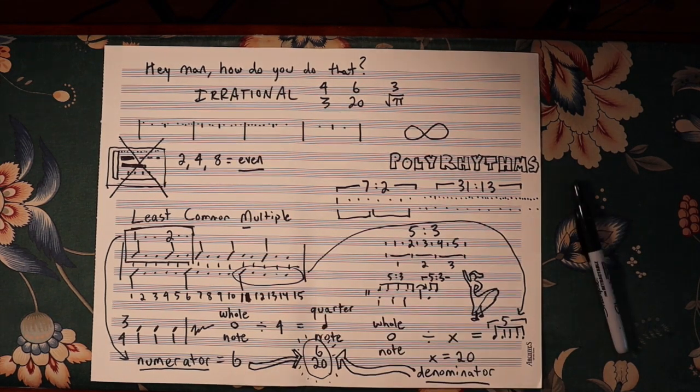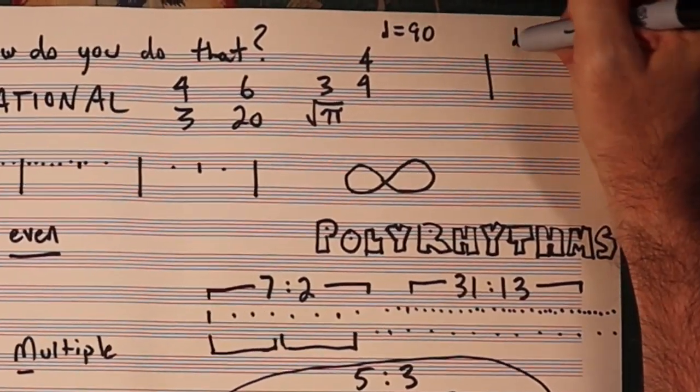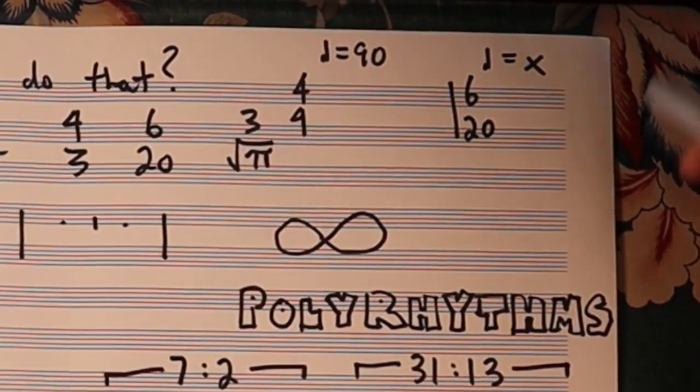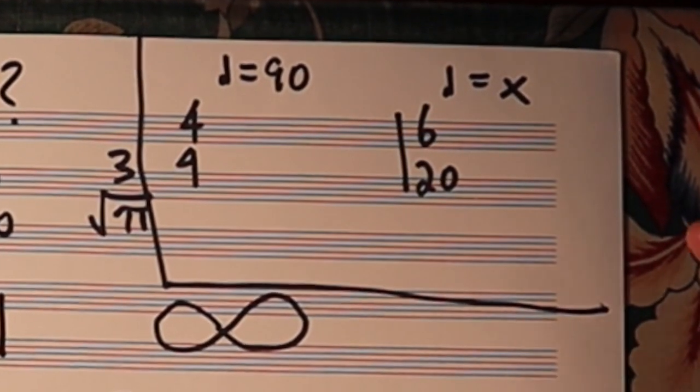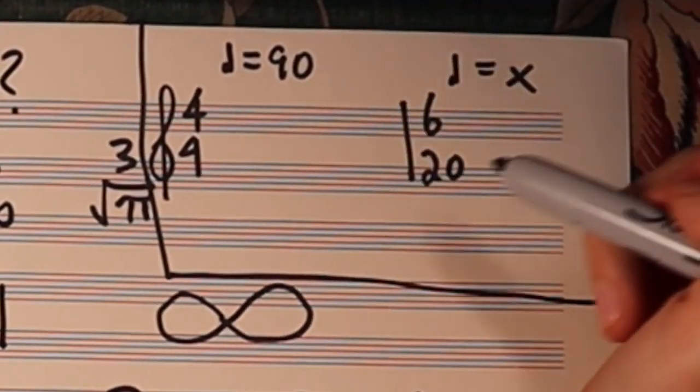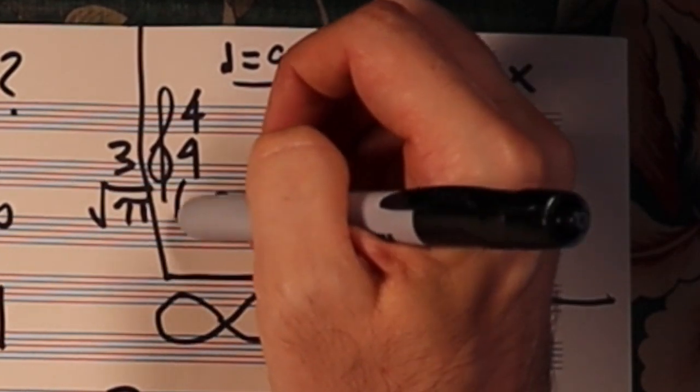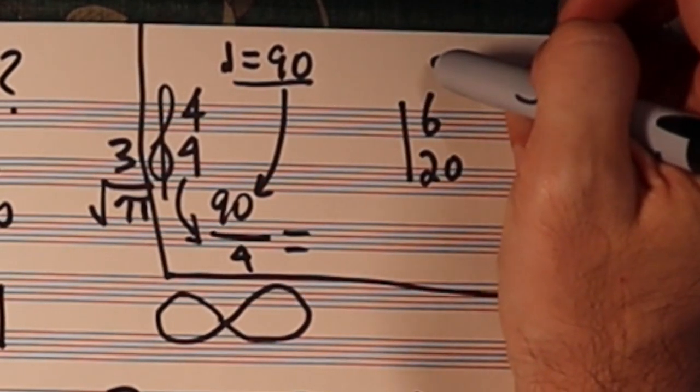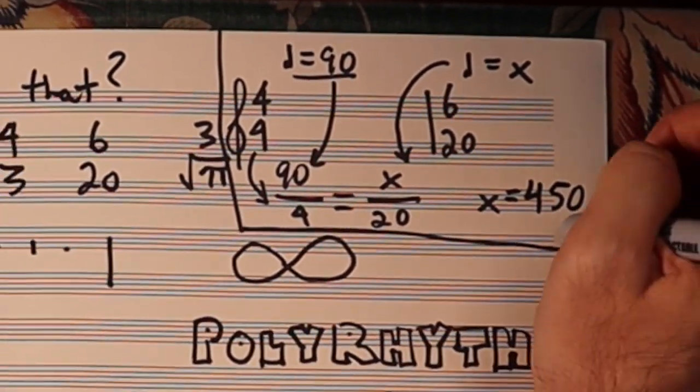Now, we have to do some math to figure out what tempo at which these subdivisions will play. If you remember the equation from my last video, you take the original tempo, divided by the original subdivision, and then multiply that by the new subdivision. So that's 90 beats per minute, divided by 4, and then multiplied by 20. This shows us that our measure of 6/20 will play back accurately at 450 beats per minute.